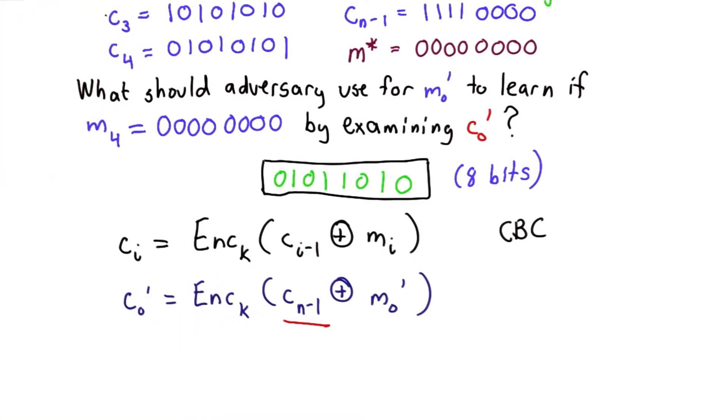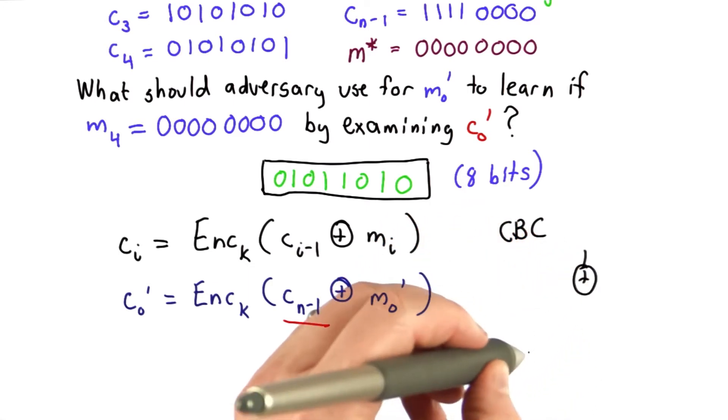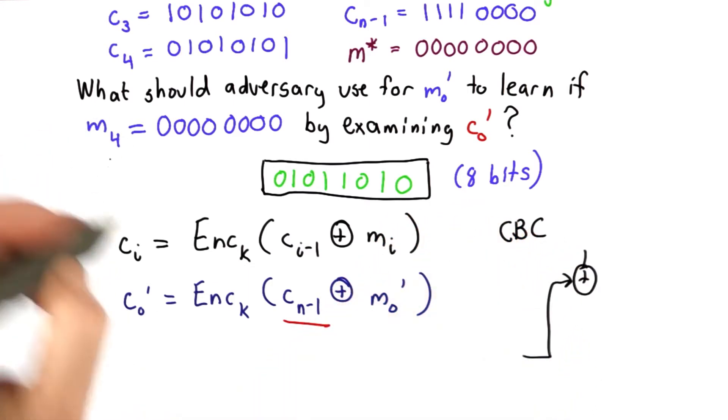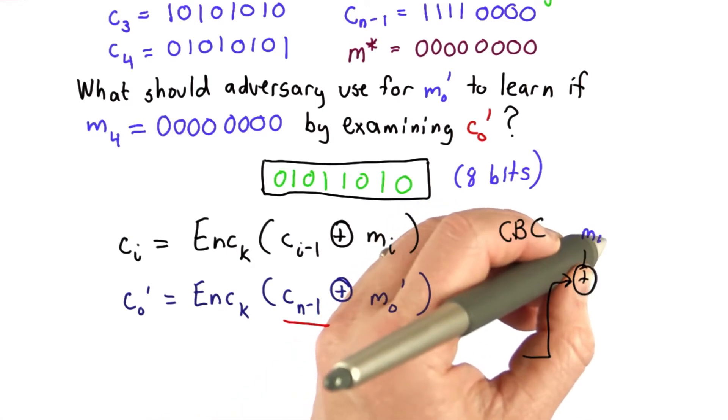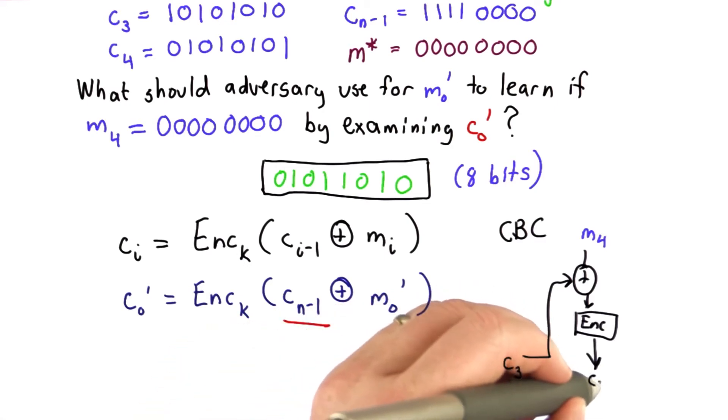So the adversary knows the encryption of all the blocks in the previous message, and we know from the way CBC worked, if we want to learn the value of m4, well m4 was encrypted in the original message using the value here. This was ciphertext 3, the previous ciphertext block, and that was encrypted, and it produces output ciphertext block 4.